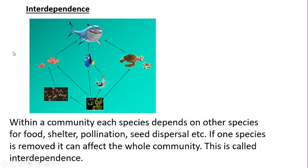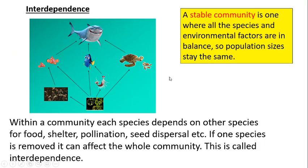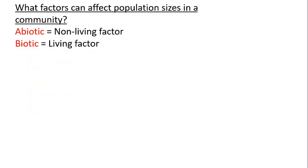If everything stays in balance and all environmental factors remain stable, population sizes will fluctuate up and down each year but roughly stay the same. But sometimes that environment changes, and that's where we have factors that can affect population sizes. Those factors can be non-living — abiotic factors — or living — biotic factors.